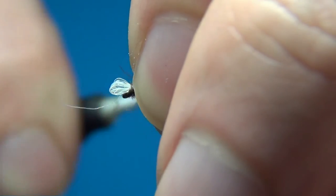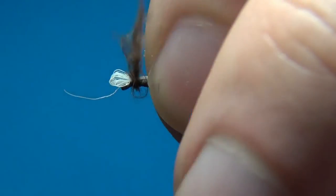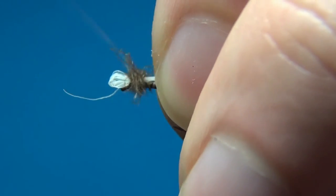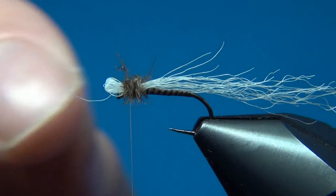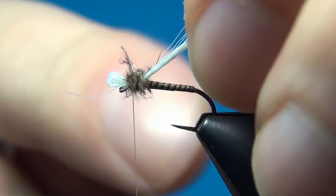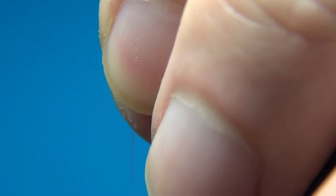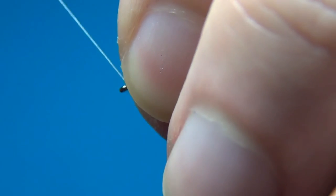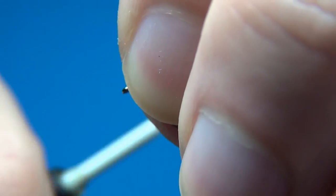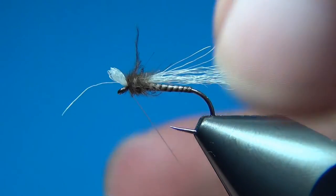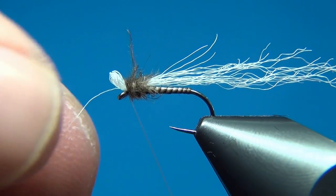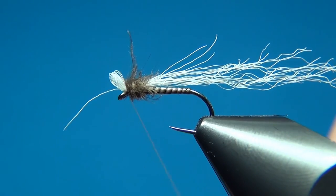And then with your CDC dubbing here we want to make a few turns right near the eye. This will create our quite short thorax. And what you do is you bring all materials back. And a few turns just in front. This will help this little bubble or wing buds or gills here to stand right up.